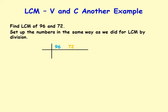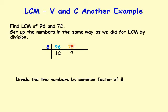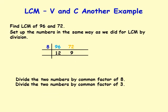Let's do another example: find LCM of 96 and 72. Set up the numbers the same way as before. These two have a common factor of 8. Divide by 8: 96 divided by 8 is 12, 72 divided by 8 is 9. Twelve and 9 have a common factor of 3, so we still have universal factors. Twelve divided by 3 is 4, 9 divided by 3 is 3.